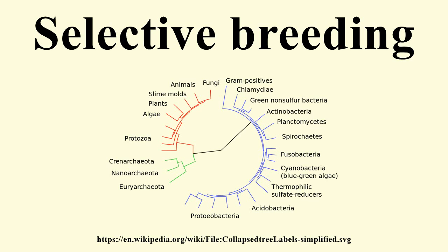Aquaculture species are reared for particular traits such as growth rate, survival rate, meat quality, resistance to diseases, age at sexual maturation, fecundity, and shell traits like shell size and shell color.